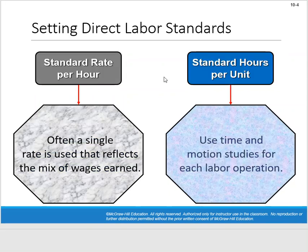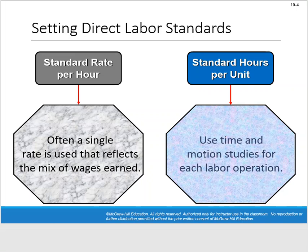For direct labor standards, the terminology changes. What was a price standard for materials is now called a standard rate per hour — that's our price of labor. Many companies use a combined wage rate that reflects the mix of wages earned by different employees. I'll keep referring to that as a price standard. Standard hours is the quantity — how much time it takes. A manufacturing company might use a time and motion study to figure out how much time it takes to produce a unit.